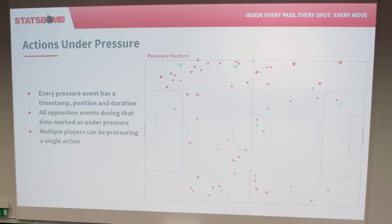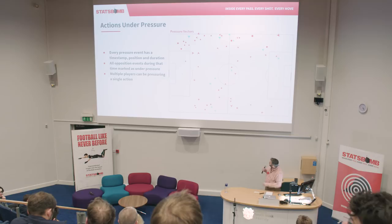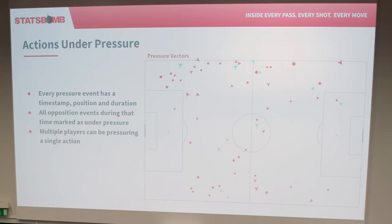These are the events I'm going to talk about. This is a very prototype visual you can get from StatsBomb IQ — the dots are just pressure events, the arrows are all actions being pressured, be they passes or shots. You can begin to tease out the direction that pressure is coming from, and look at things like length and intensity. If you keep chasing the player, you get multiple pressure events, so you can actually build a vector of how you move towards that player.